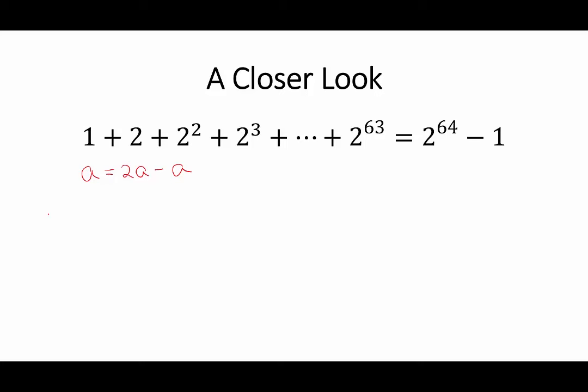So, we have this amount. Let's just write it like this, 2 to the power of 0 plus 2 plus 2 squared and so on. So, what we're going to do is, we're first going to multiply this by 2.